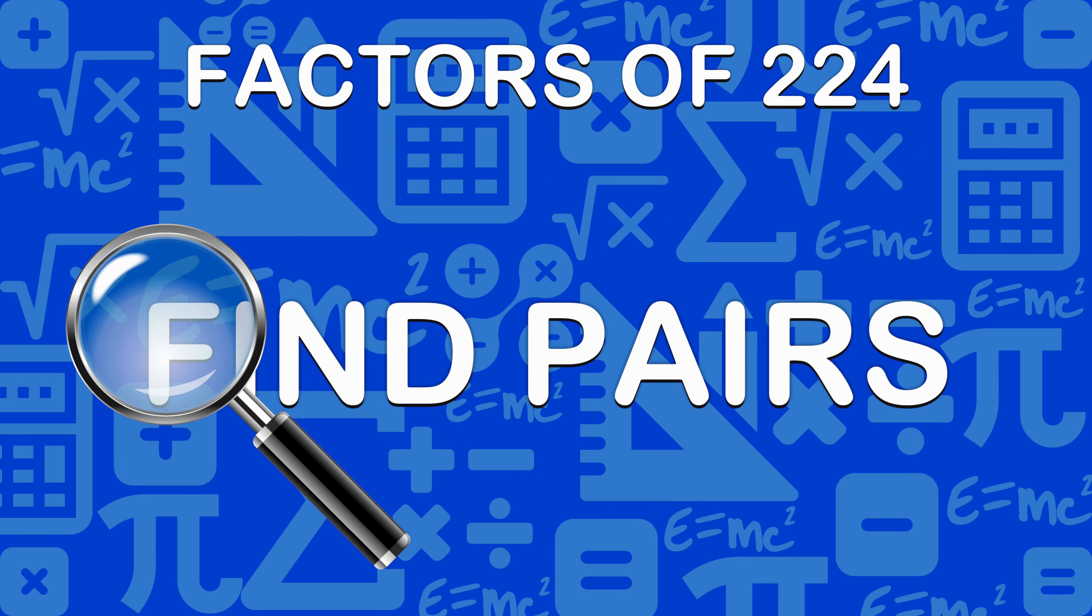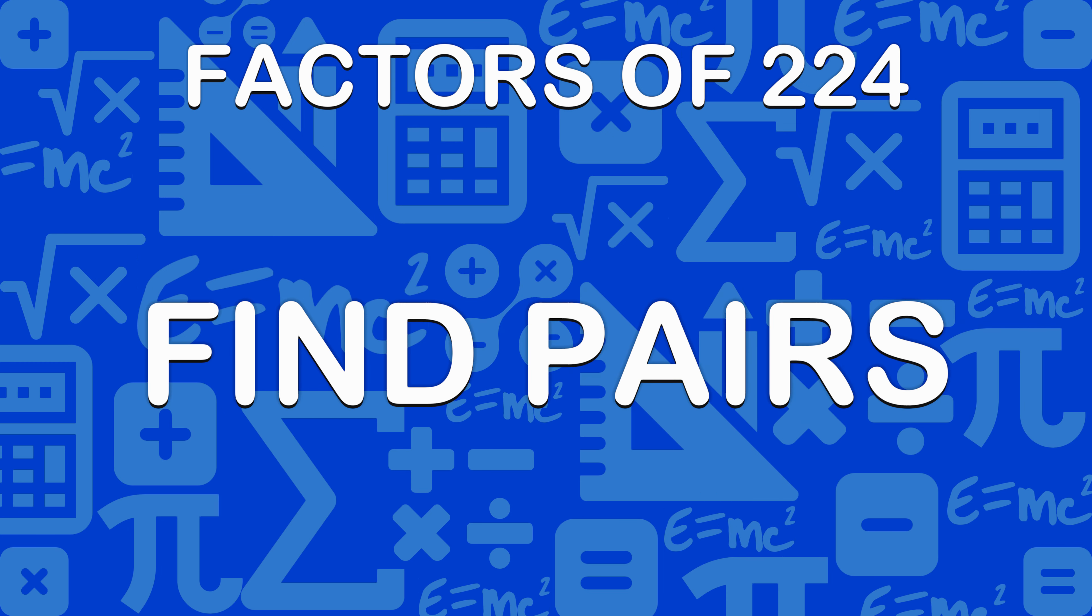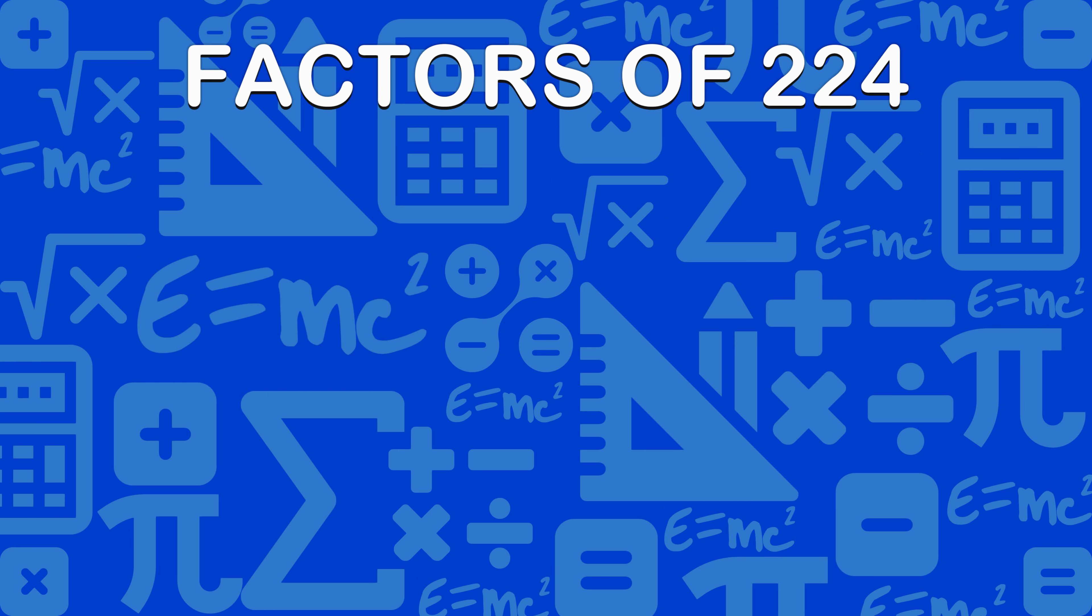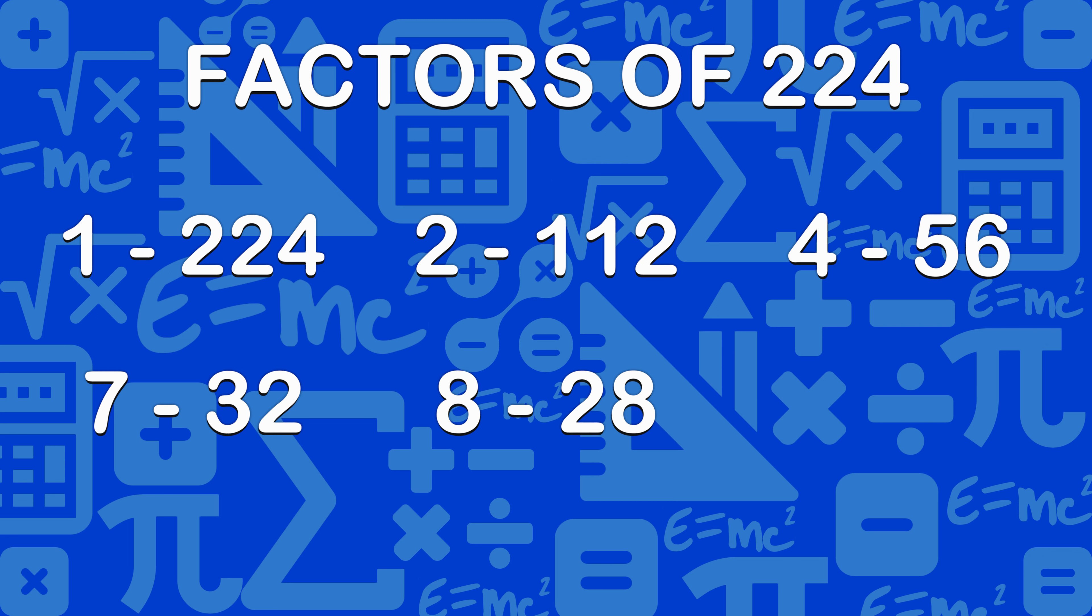Firstly, we will find pairs of factors. Pairs are numbers that multiply to given number. Here are pairs of factors of 224: 1×224, 2×112, 4×56, 7×32, 8×28, 14×16.